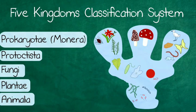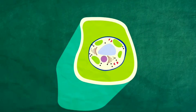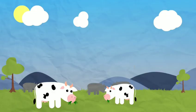These characteristics are based on cell walls, whether they are eukaryotic, prokaryotic, and on the way they get nutrition.